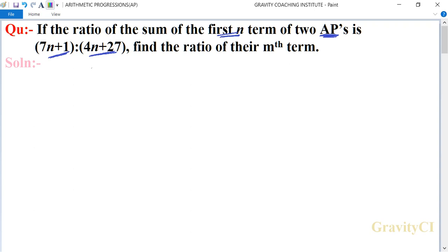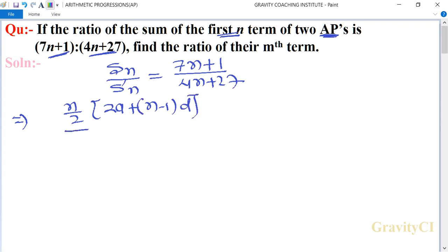Given that Sn upon S'n is equal to 7n+1 upon 4n+27. This implies that we use the formula for sum of first n terms of an AP: n/2[2a+(n-1)d] upon n/2[2A+(n-1)D] equals 7n+1 upon 4n+27.